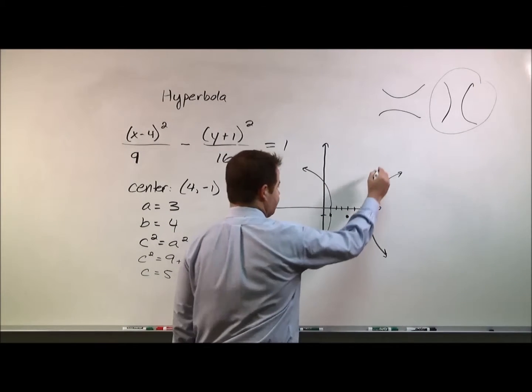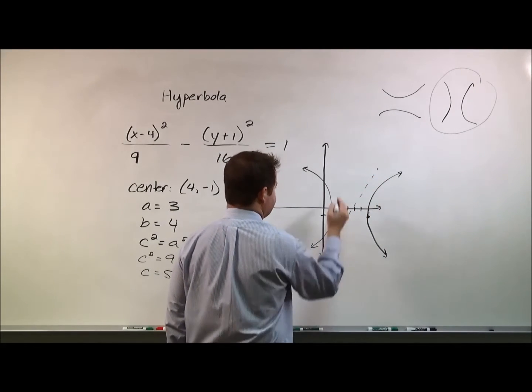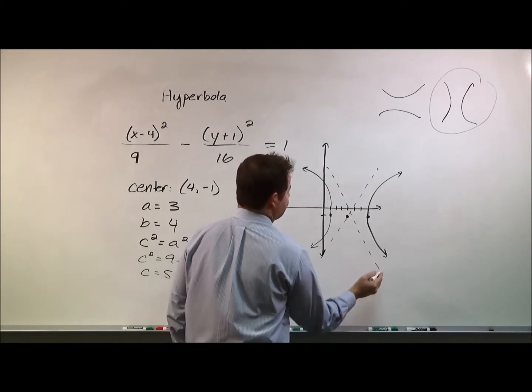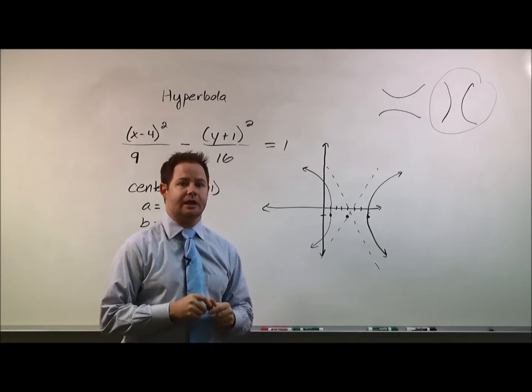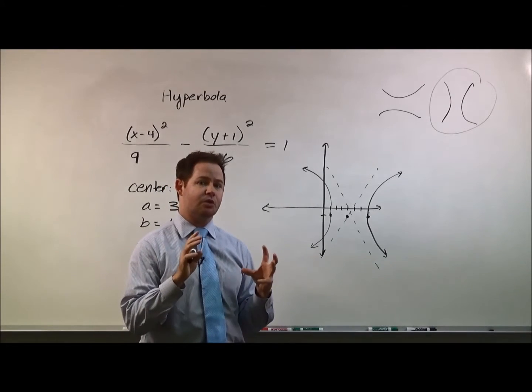you can use the values of a and b to figure out where the asymptotes cross the center. And when you calculate those asymptotes, that will show you the actual lines that the hyperbolas will approach yet not touch so that you can come up with a more exacting graph.